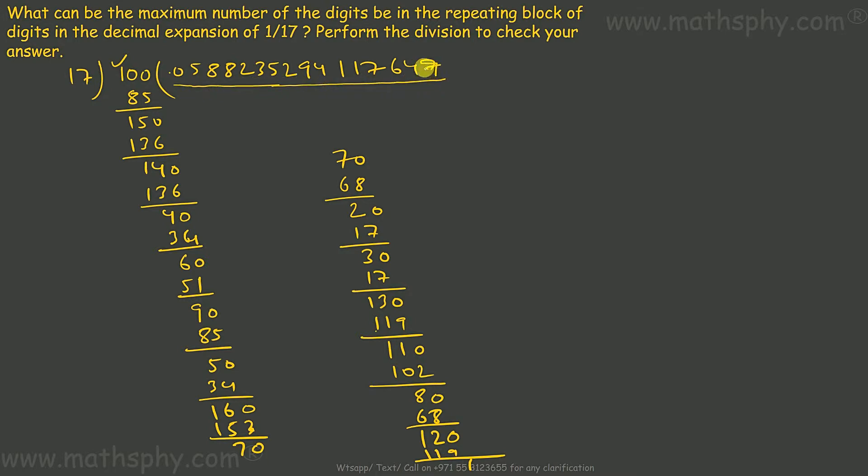It means I can stop here and see. I have 1, 2, 3, 4, 5, 6, 7, 8, 9, 10, 11, 12, 13, 14, 15, 16 numbers here after decimal. So I'll write here: 1 over 17 is equal to 0.0588235294117647, and this will go on top of the entire numbers. That's the answer here.